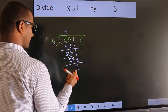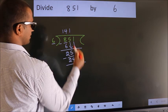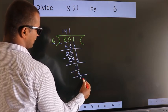So, 11. A number close to 11 in the 6 table is 6 times 1 equals 6. Now we subtract. We get 5.